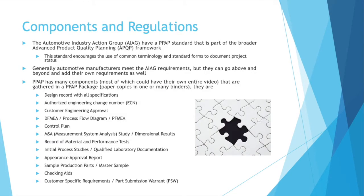There are many components to the PPAP. The Automotive Industry Action Group (AIAG) has a PPAP standard that is part of the broader Advanced Product Quality Planning framework. This standard encourages the use of common terminology and standard forms to document project status, and PPAP terminology is very common in the automotive industry. PPAP has so many detailed components that each part of it could have a video dedicated to it — and my channel, Beginning Engineers, does have videos on a few of these topics, so feel free to search the channel.